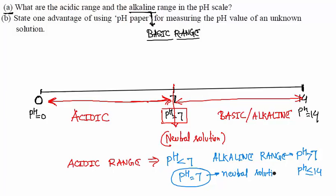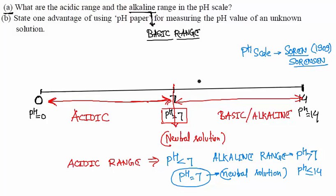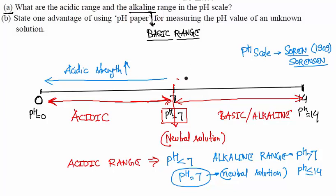One more thing: this pH scale was given by scientist Soren Sorenson, and the year was 1909. Additionally, when you move from 7 towards 0, your acidic strength increases, and when you move from 7 towards 14, your basic strength increases.